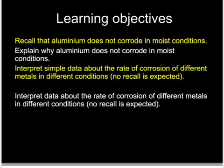In an examination question, you may be given data in a table about various metals and how much they corrode and how they corrode over time. Specifically, you need to know about aluminium and iron or steel and how they compare with their corrosion rates.